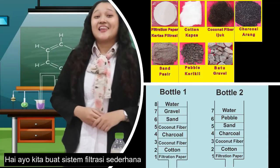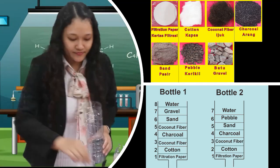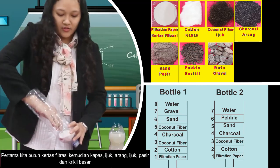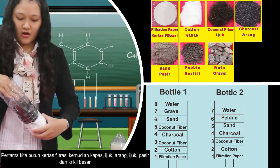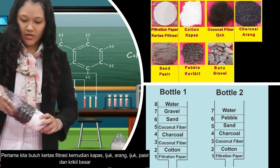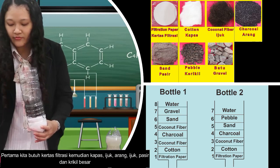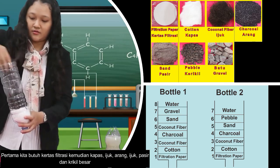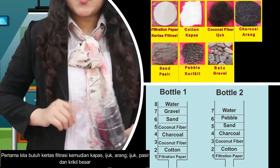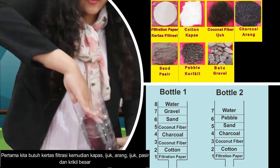Let's make our simple filtration system. First we need filtration paper, then we need cotton, then coconut fiber, and after that we need sand.